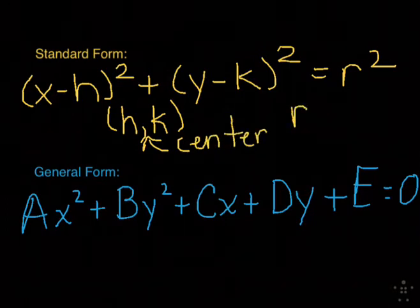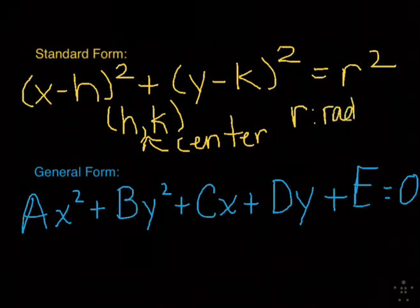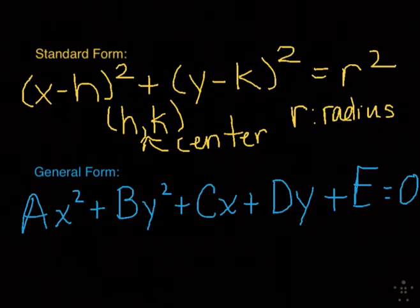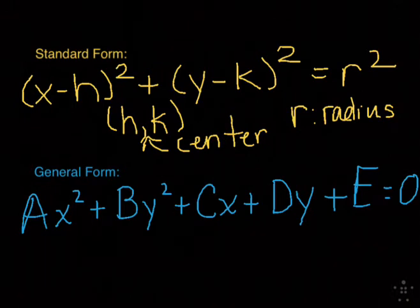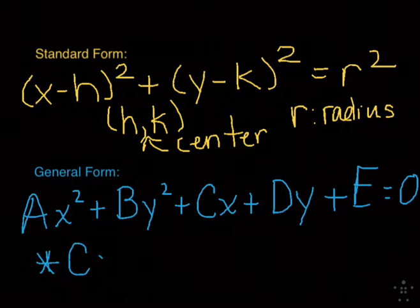Then we also have the general form. General form is Ax² + By² + Cx + Dy + E = 0. We typically don't use it a whole lot, but it does pop up most times as far as converting. In this video, we're going to look at converting from general form to standard form. In order to do that, we're going to do completing the square, kind of a modified version.